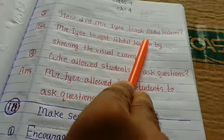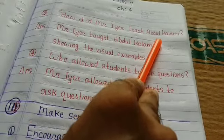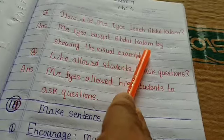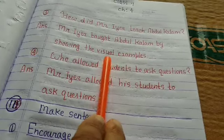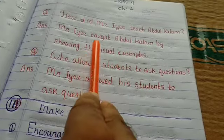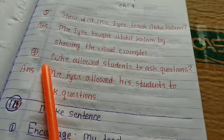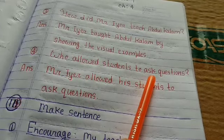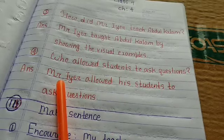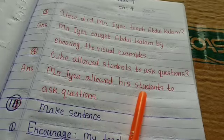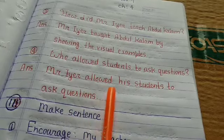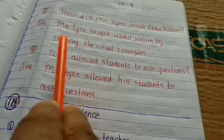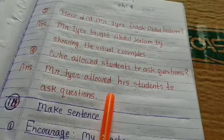Question 3: How did Mr. I.R. teach Abdul Kalam? Answer: Mr. I.R. taught Abdul Kalam by showing the visual examples. Question 4: Who allowed students to ask questions? Answer: Mr. I.R. allowed his students to ask questions — Mr. I.R. apne chhatron ko prashn poochhne ki anumati dete the. Aapko 3 aur 4 likh lena hai.